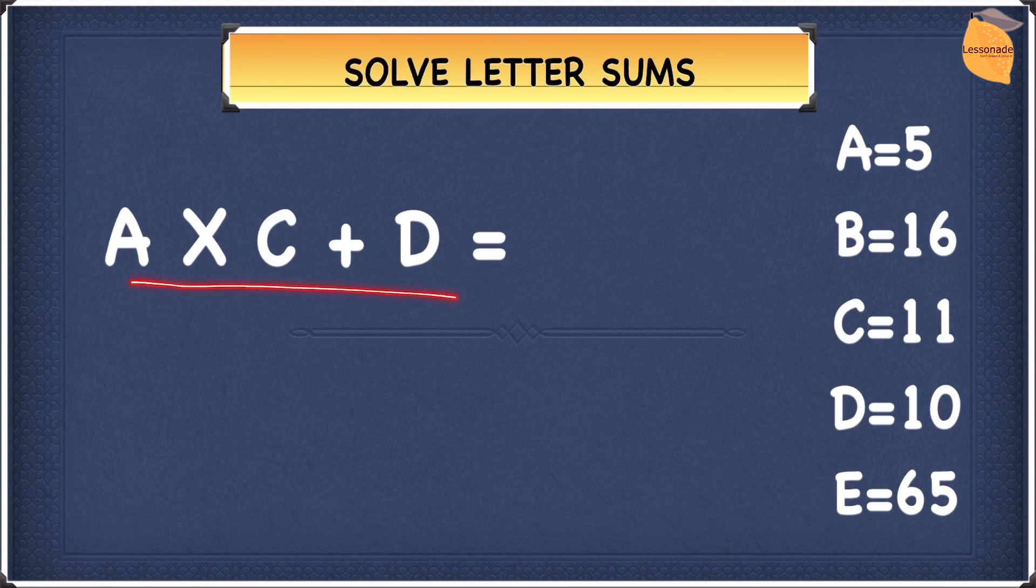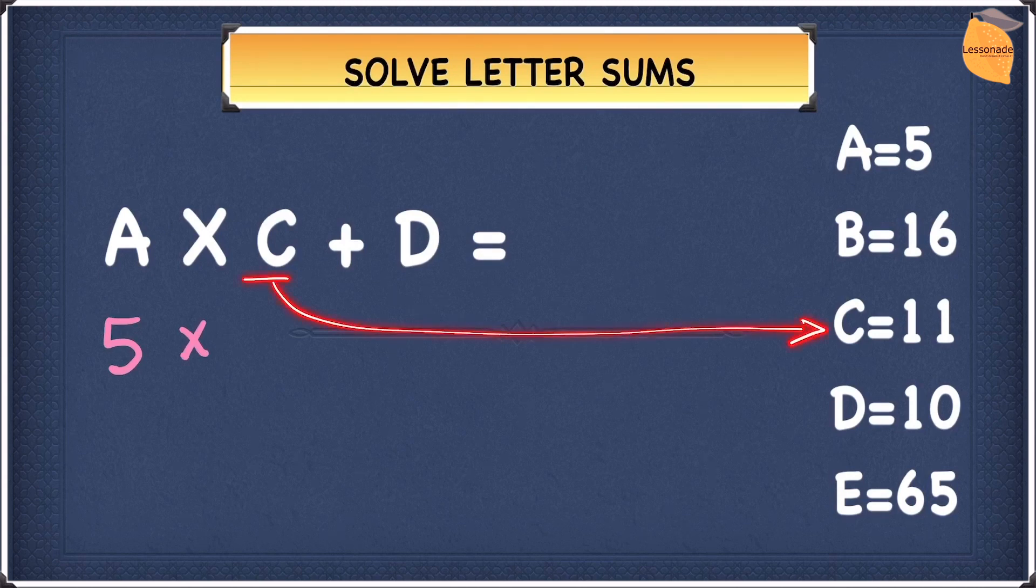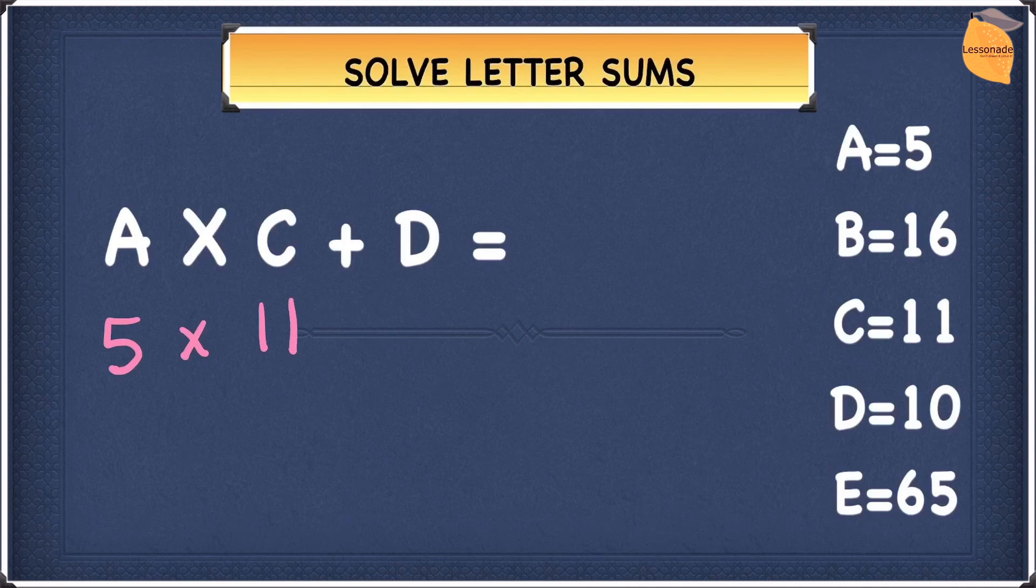Our question is A times C plus D. Let's work it out from the left hand side. A, as we know, is going to be 5 and let's write the 5. We're going to multiply this by C. C is going to be 11. 5 times 11. We're going to add this to D. D is 10.